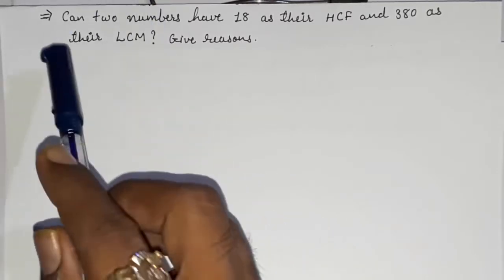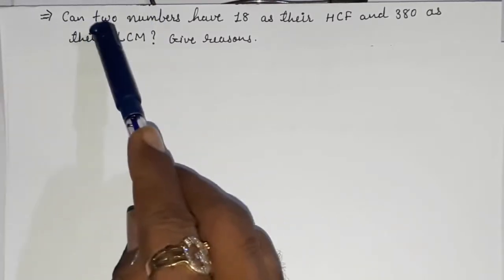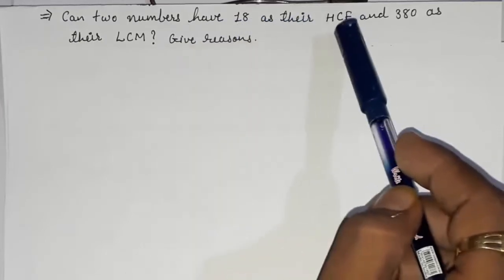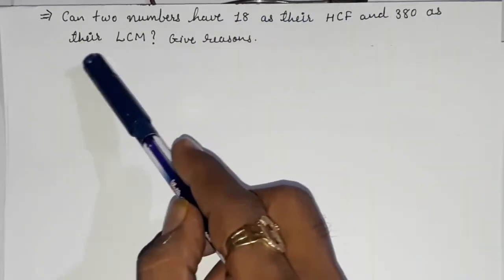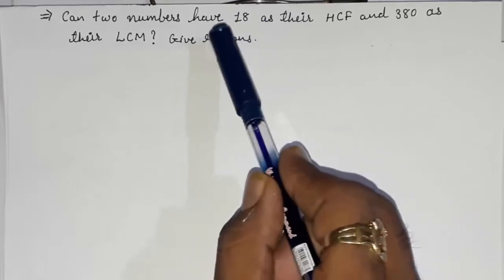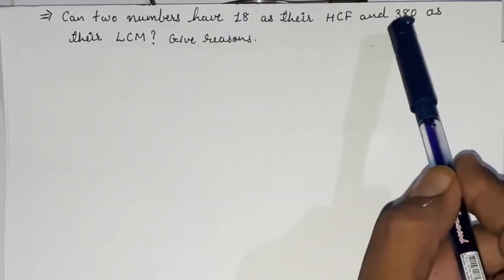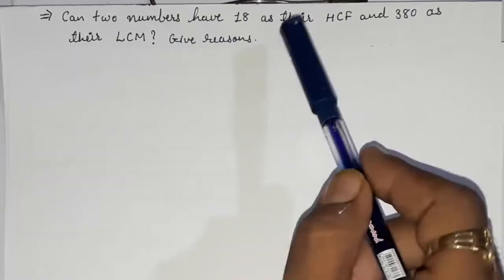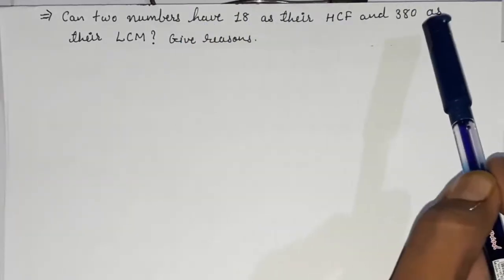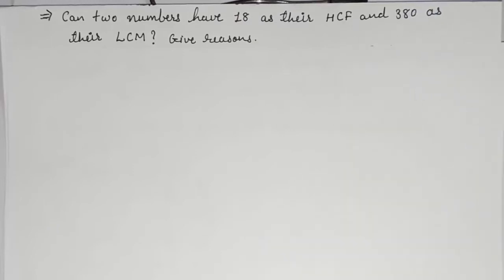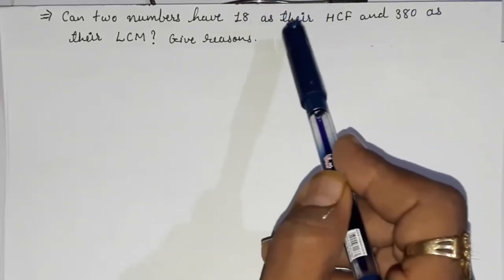Let us start with question number one: Can two numbers have 18 as their HCF and 380 as their LCM? So how can we find out whether 18 as HCF and 380 as LCM is possible for any two numbers?